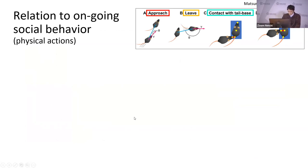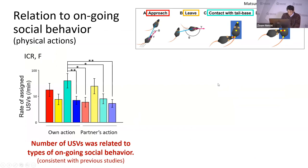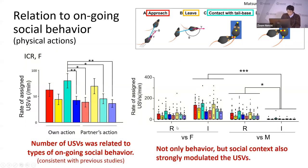First, we compared the rate of USVs during different behaviors. We found the rate was highest when the emitter's snout was around the tail base, possibly associated with anogenital investigation — consistent with previous studies. When we performed the same analysis separately for each different social context, we found the rates were different across contexts, even when the mice were doing the same action.